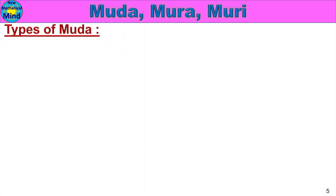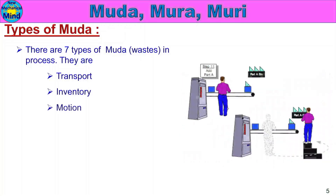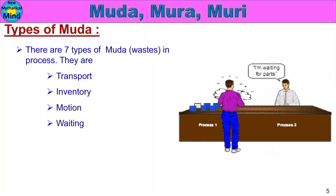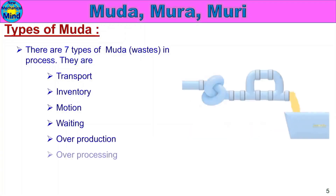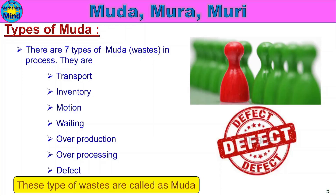Now, what does Muda mean and how do we identify it? The next step is the types of Muda. There are seven types of Muda or wastes in a process. In any industry, company, or production process, there are seven types of Muda or wastes: Transport, Inventory, Motion, Waiting, Overproduction, Overprocessing, and Defect. These types of wastes are called Muda.